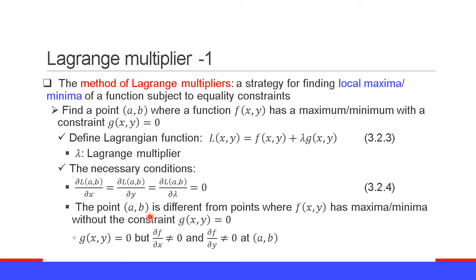Please note that the point (a,b) is different from the points where function f(x,y) has maxima or minima without the constraint g(x,y) equal to 0. Namely, at point (a,b), of course g(x,y) equals 0. But the partial derivative of g with respect to x is non-zero, and the partial derivative of function f with respect to y is also non-zero.